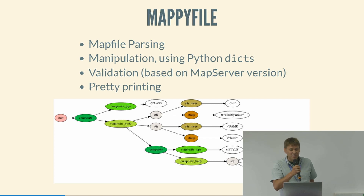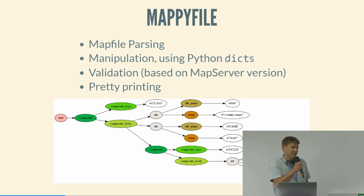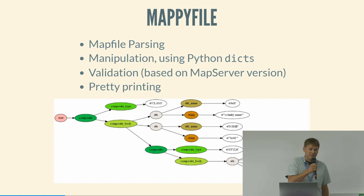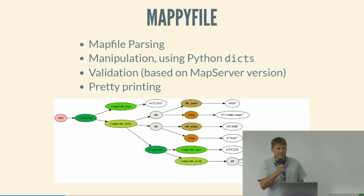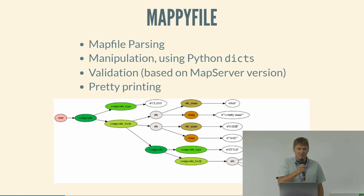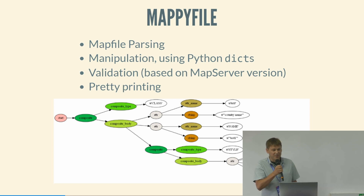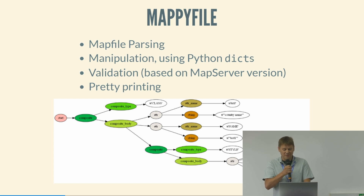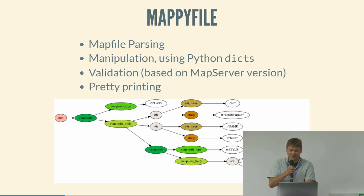About seven or eight years ago I started working on a Python project called MappyFile, which allows you to parse a MapFile using Python and modify it using Python dictionaries. It's very easy to create new layers and add new styles — you can create hundreds of layers and hundreds of MapFiles quickly, so you don't have to write it all by hand. It's an open source project, and if you're working with lots of MapFiles it's quite handy.